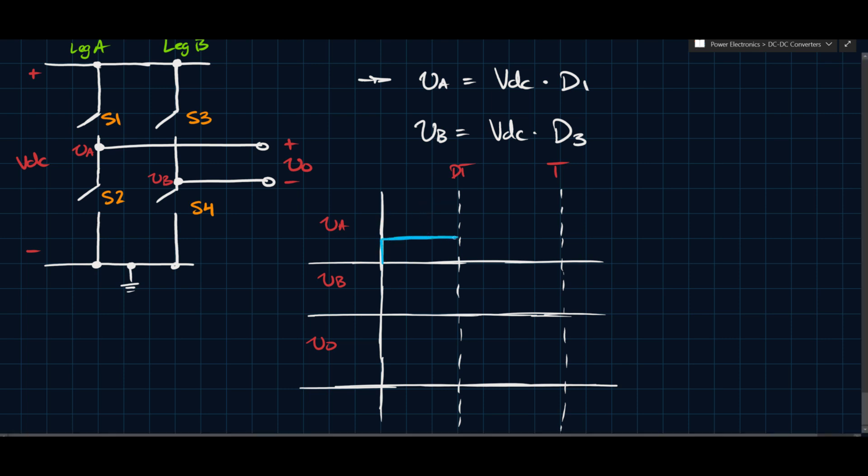So if S1 is on, if this is connected to the top, then VDC is between these two points. This is what VA is. VA is basically the voltage across switch two.